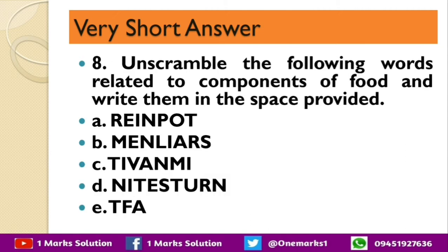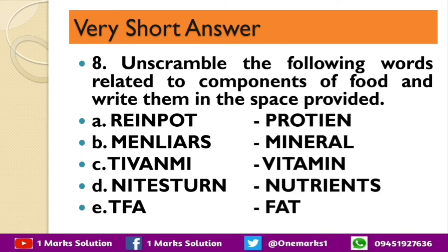Unscramble the following words related to components of food and write them in the space provided. R-E-I-N-P-O-T will be converted to protein. M-E-N-L-I-A-R-S will be converted to minerals. T-I-V-A-N-M-I will be converted to vitamins. N-I-T-E-S-T-U-R-N will be converted to nutrients. And T-F-A will be converted to fat. You can see this.